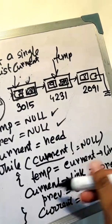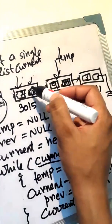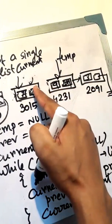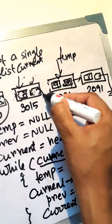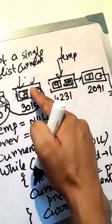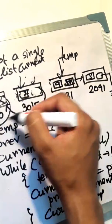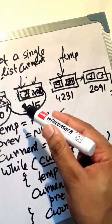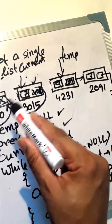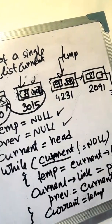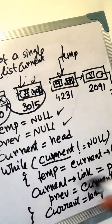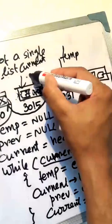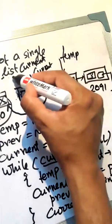The current pointer link is now set to previous. Here is this node — the current pointer link now points to previous. We have to disconnect the node from the previous one and connect it to the previous pointer.